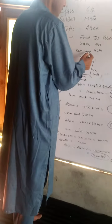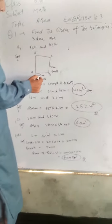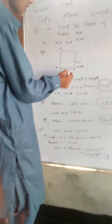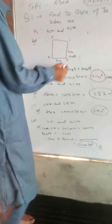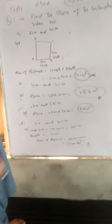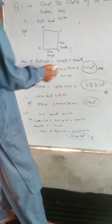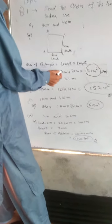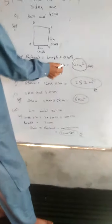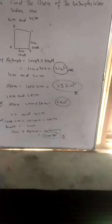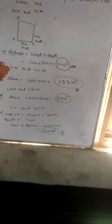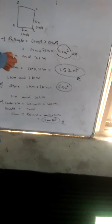For the first case, the length is 3cm and the breadth is 4cm. Area of rectangle = 3cm × 4cm = 12cm². For the next case, the length is 12m and the breadth is 21m.